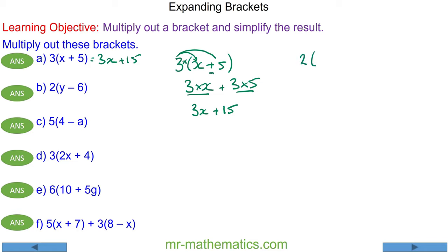For question B we have two lots of y minus 6. We'll begin by 2 times y take away 2 times 6. We're multiplying everything on the outside by every term on the inside. So 2 times y is 2y and 2 times 6 is 12. The expansion is 2y minus 12.